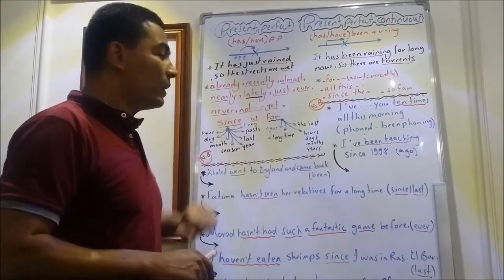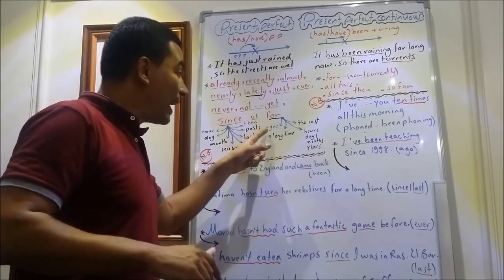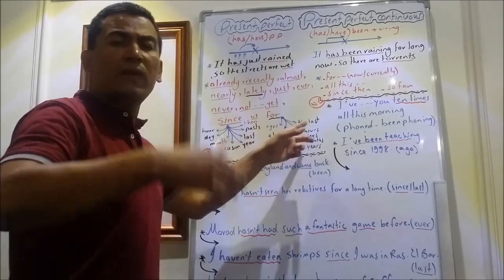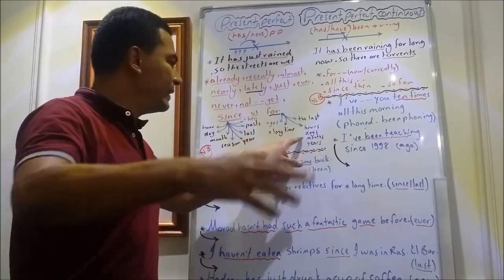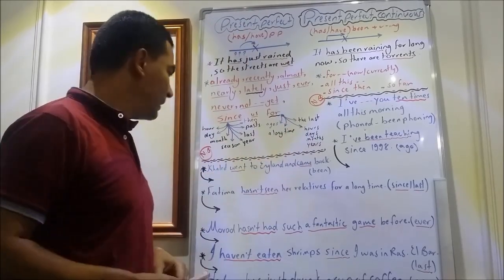For is followed by period of time. If I say for ages, for a long time, for the last week, month, year, or for seven hours, for seven days, for seven months, for seven years.